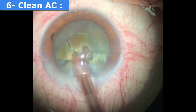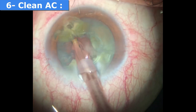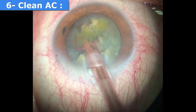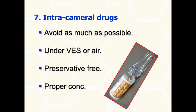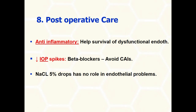Avoid tumbling or bouncing of nuclear fragments within the anterior chamber, as these fragments may brush the corneal endothelium. Intracameral drugs should be avoided as much as possible; if needed, they should be of the proper concentration and injected in a viscoelastic-filled chamber. Any degree of post-operative inflammation should be treated aggressively to help survival of the corneal endothelium. IOP spikes following inadequately washed-out viscoelastic are treated with beta blockers or alpha agonists. Avoid systemic or topical carbonic anhydrase inhibitors, as these inhibit the endothelial pump, thus aggravating corneal edema.